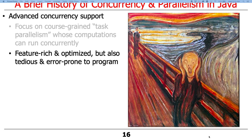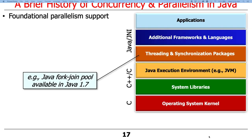Java 1.5 was very powerful with lots of cool features — essentially a master class in how to write concurrent object-oriented infrastructure, frameworks, and mechanisms. However, it's also rather tedious and error-prone to program, because you're still working at fairly low levels of abstraction. It was better than Java 1, but it still took too much work.